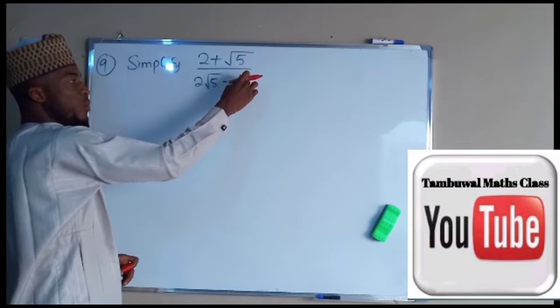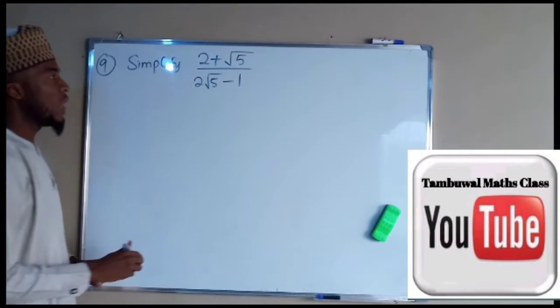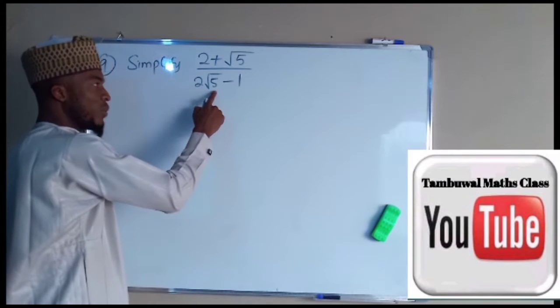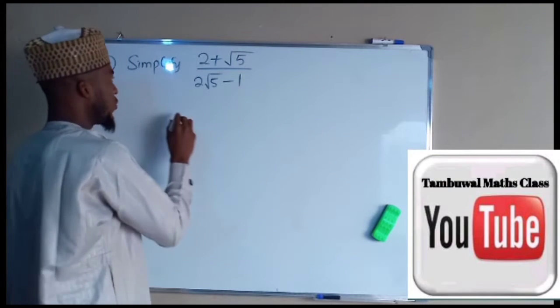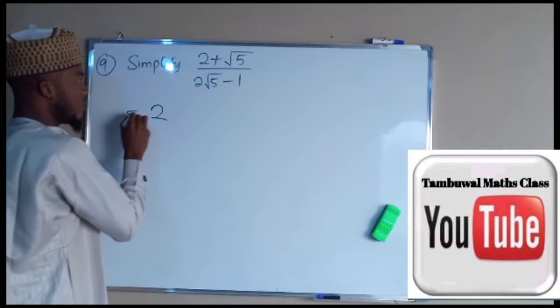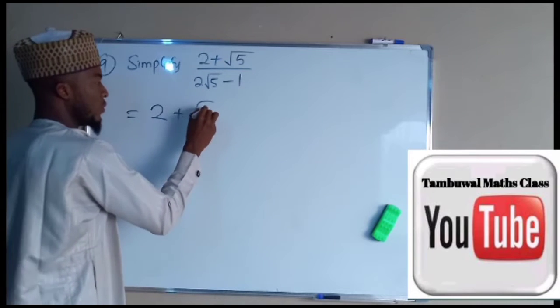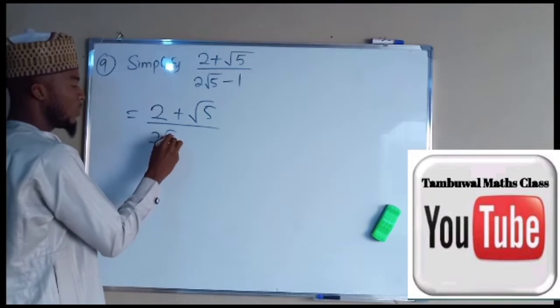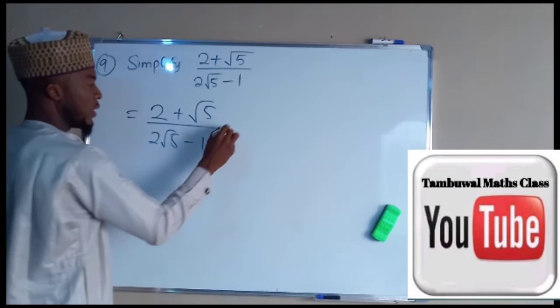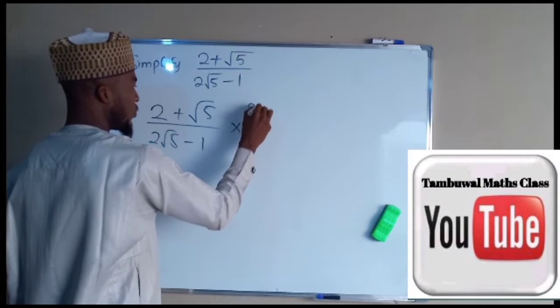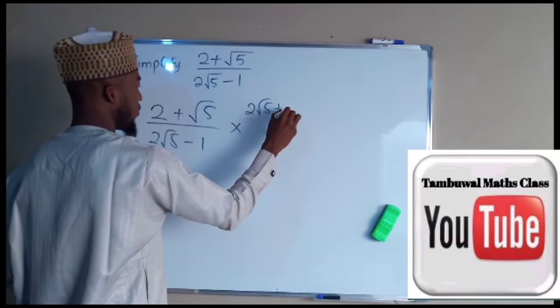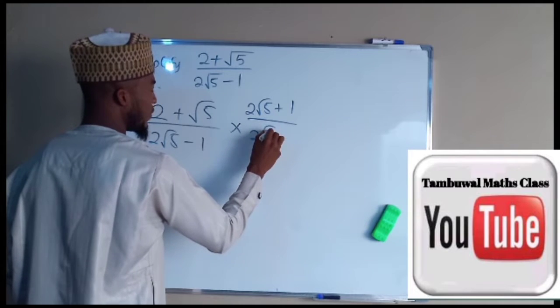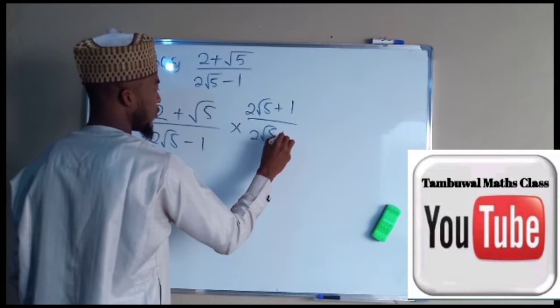the numerator and denominator by the conjugate of the denominator, and the conjugate of the denominator is 2 root 5 plus 1. So we are going to have 2 plus root 5 divided by 2 root 5 minus 1 multiplied by 2 root 5 plus 1 divided by 2 root 5 plus 1.